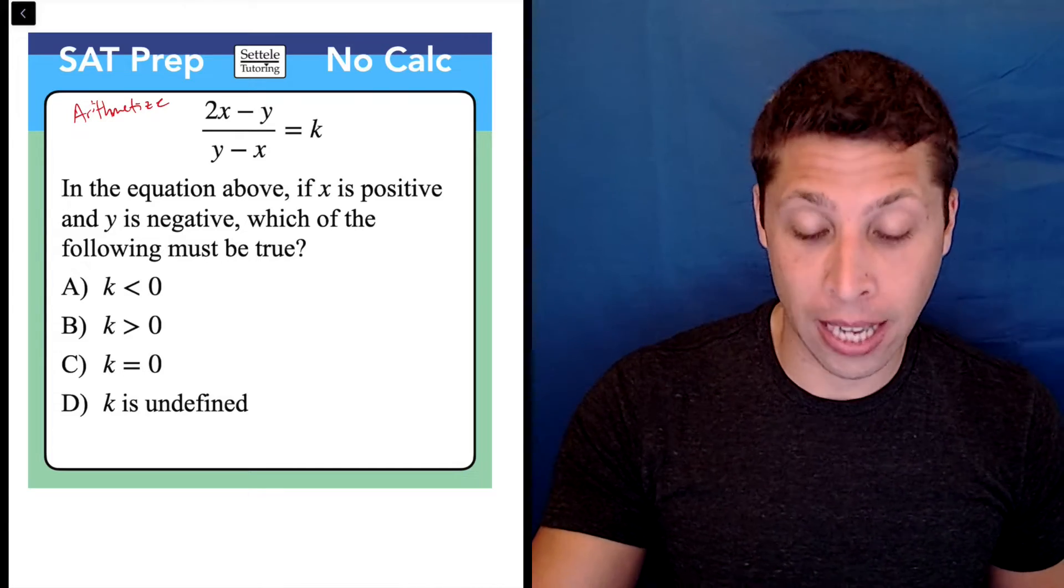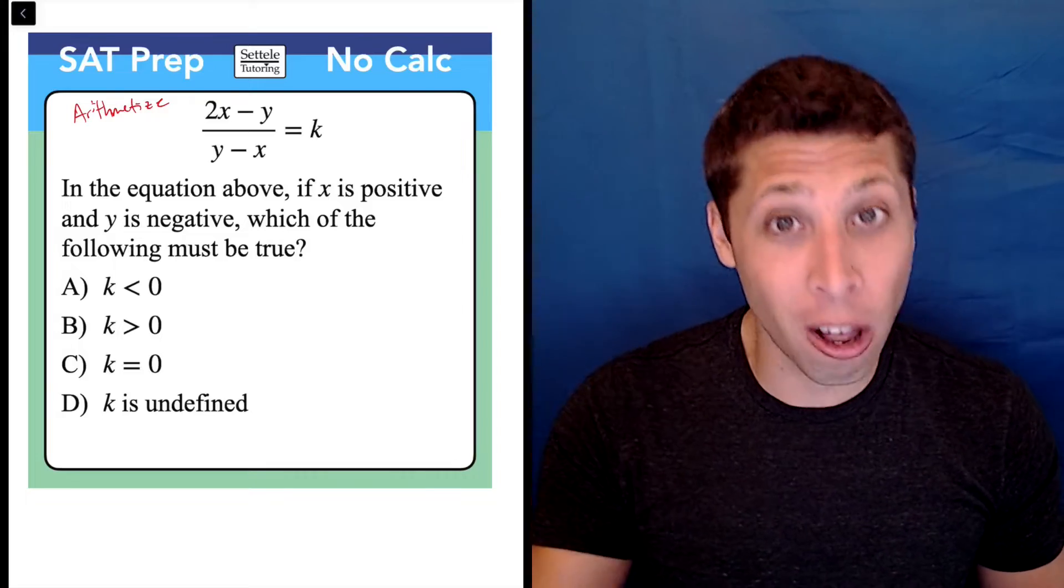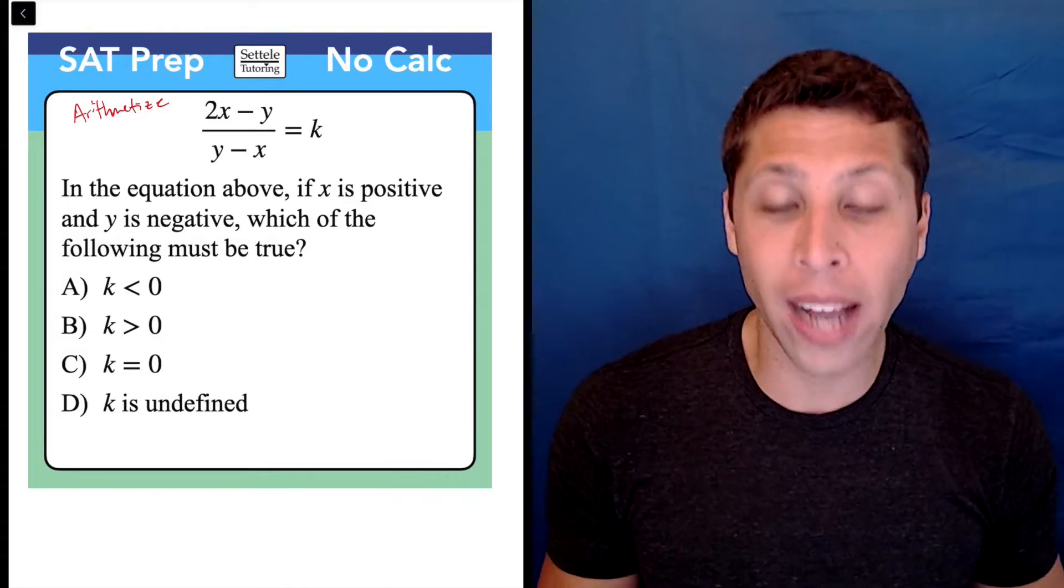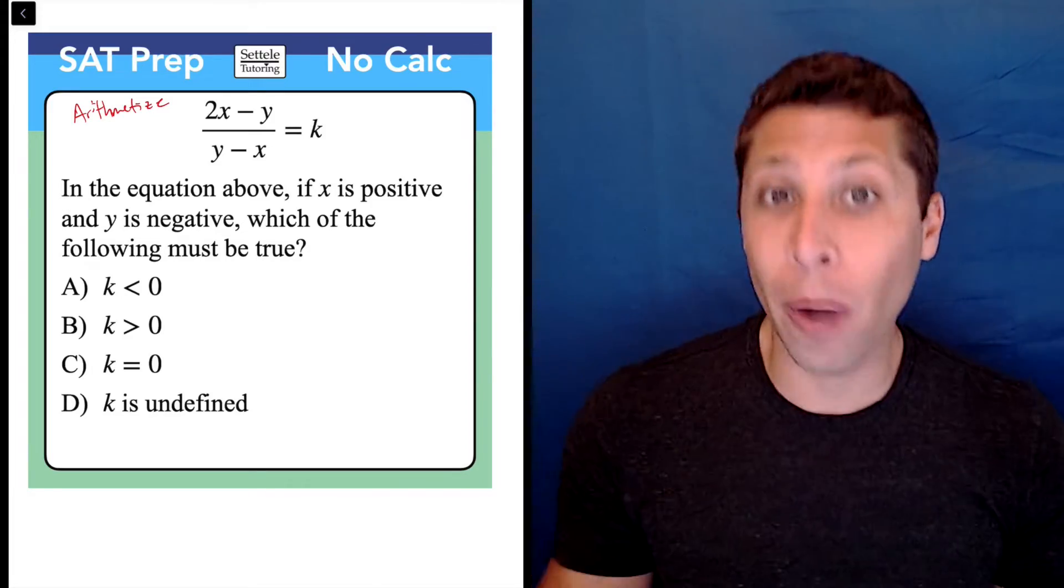We're asked what's happening to k, and we're told things about x and y, but we're never told to solve for them. They don't have specific values. We just know that x is positive, y is negative, and we're trying to figure out what's happening with the whole equation. Well, don't try to think about it. Just show it.